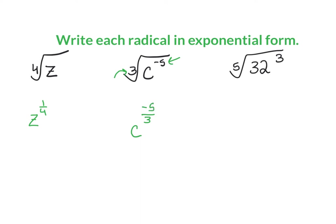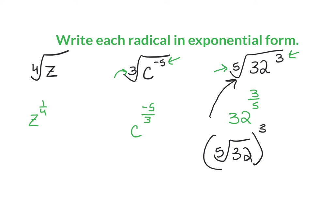All numbers, so I can evaluate this one all the way. If I just write it in exponential form, I have 32 to the power of 3/5 — the root is my denominator, 3 is on top. Another way to think about it: the fifth root of 32 to the third. The fifth root of 32 is 2, so 2 to the third is 8.